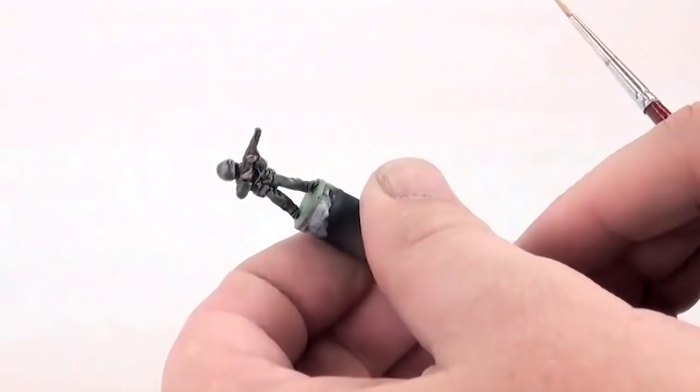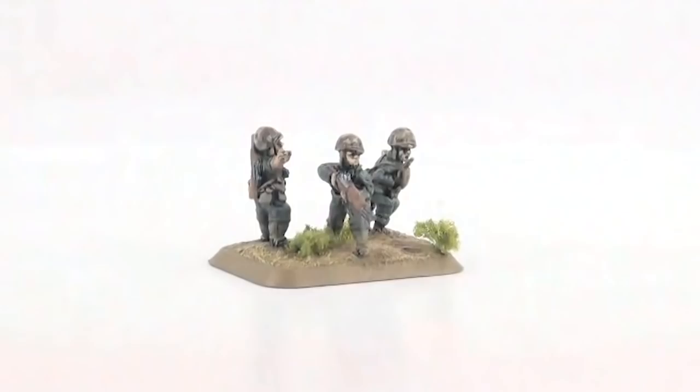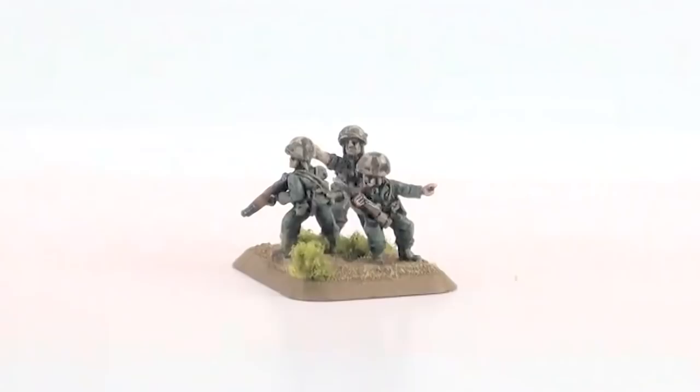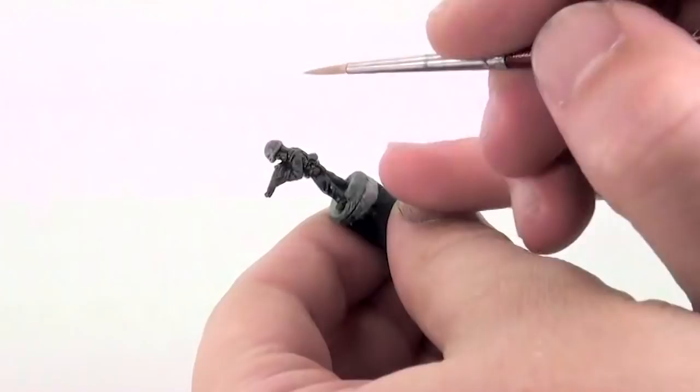For anyone new to miniature painting, this process is known as highlighting. The reason is to show where light is naturally falling on the model, and is therefore brighter than parts where light would be blocked.